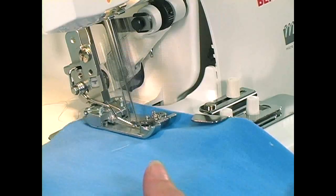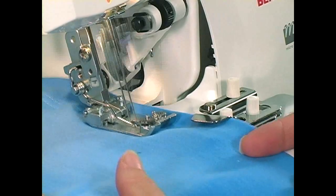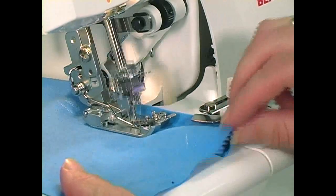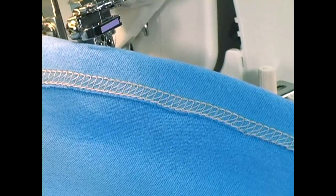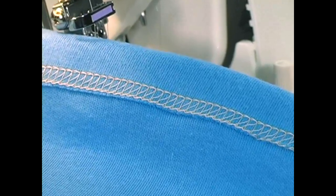The cover stitch guide is particularly effective on light to medium weight knits and medium weight decorator fabrics. The cover stitch hem guide may be used with either the wide or narrow cover stitch and two or three needle variations.